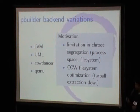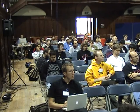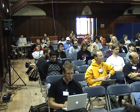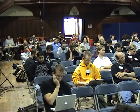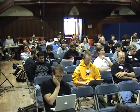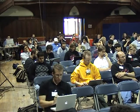Now I'd like to talk about the different backends pbuilder has: LVM, UML, cowbuilder, and QEMU. The motivation is that pbuilder base.tgz creation is sometimes slow, and chroots do not have segregation on process space — if something is running inside a chroot as root it can theoretically affect outside the chroot. So to make the segregation better there are tools like QEMU and UML, and to improve the speed of extraction I can use LVM and other solutions. That's the basic motivation for the alternative backends.